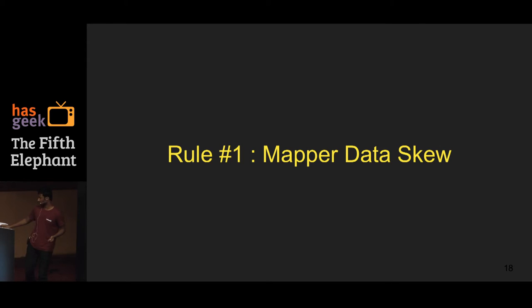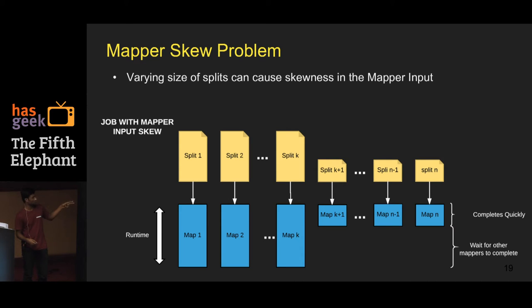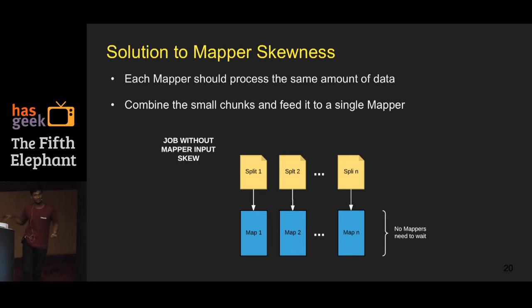Let me discuss a couple of rules. One is mapper data skew. When you run a MapReduce job, it runs a set of mappers and reducers. If there is skewness in the input to mappers, we say there's mapper data skew. For example, if mappers 1 through k read a larger split of data while mappers k+1 through n read a smaller split, the latter will complete sooner and then have to wait for the others. Ideally, every mapper should get the same amount of data.